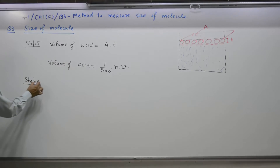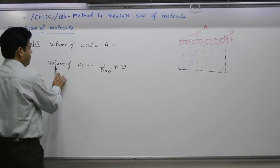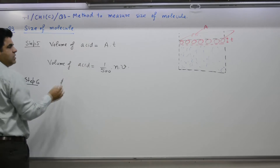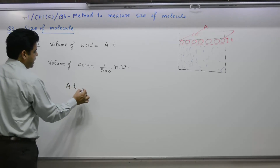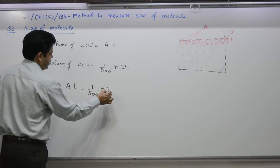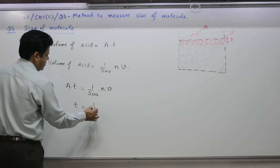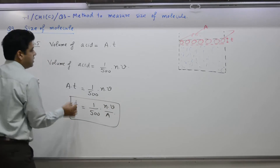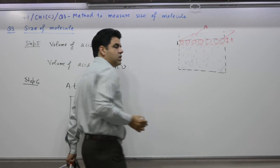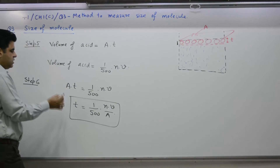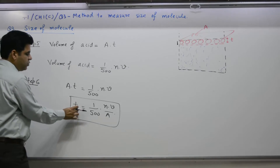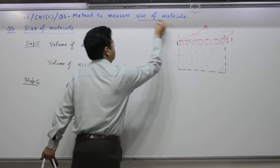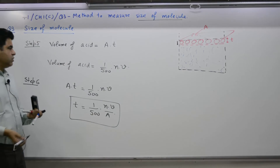Step number 6: Volume of acid by method 1 is (1/500)nV. Volume of acid from the diagram is A×T. Setting them equal: A×T = (1/500)×nV, so T = nV / (500×A). T gives the thickness of this film. With the assumption that this film is one molecule thick, the thickness of the top layer equals the size of a molecule. This is how you measure the size of a molecule.